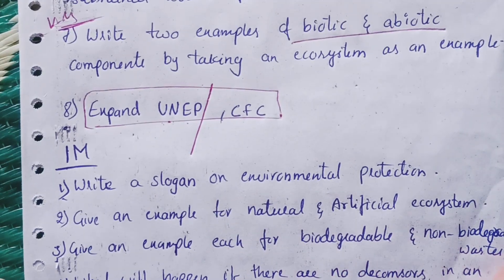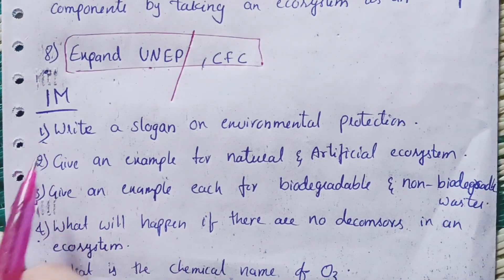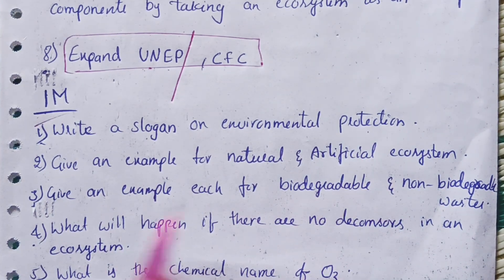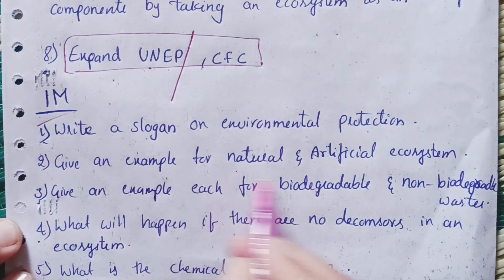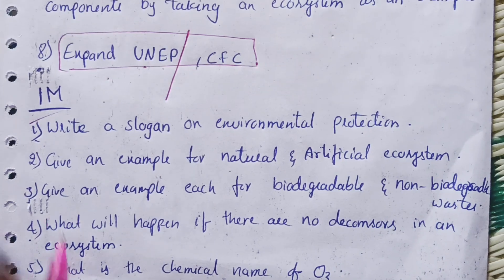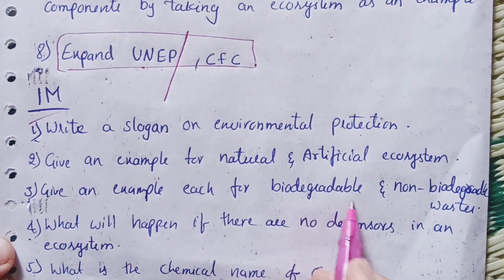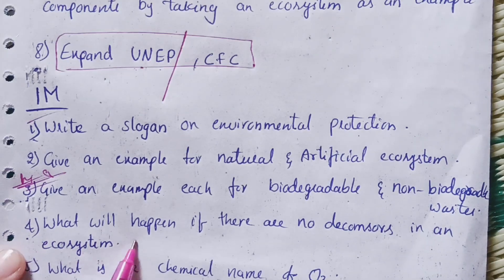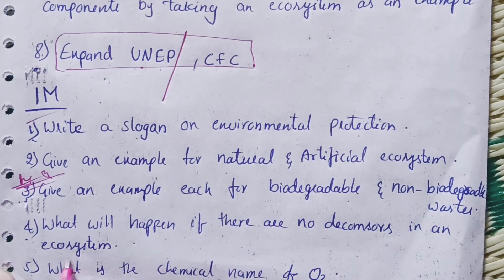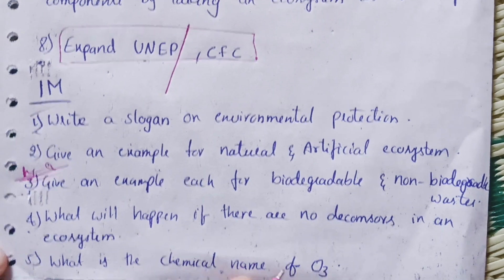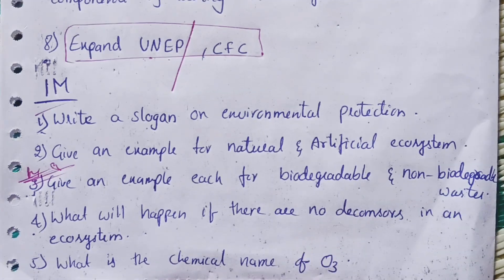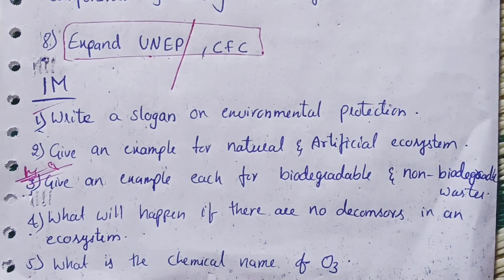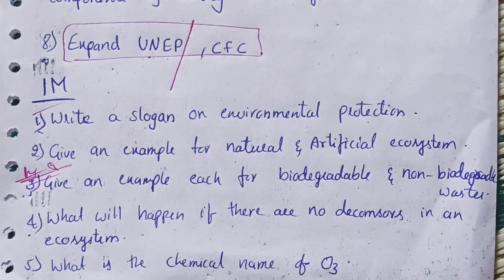Now the one-mark questions. First: Write a slogan on environmental protection. Second: Give an example of a natural and artificial ecosystem. Third: Give an example each for biodegradable and non-biodegradable waste. Fourth: What will happen if there are no decomposers in an ecosystem? Fifth: What is the chemical name of O3? These are the five important one-mark questions and our 'Our Environment' important questions are now complete.